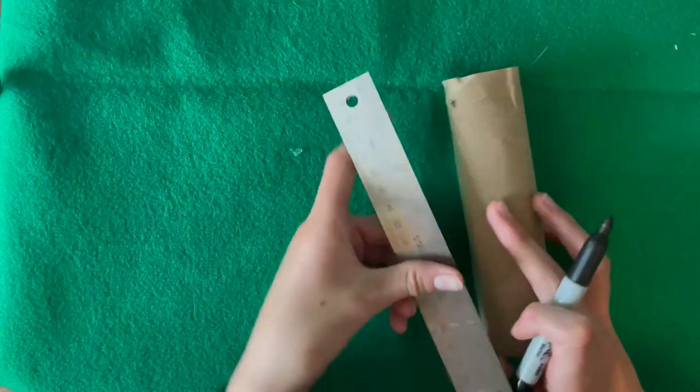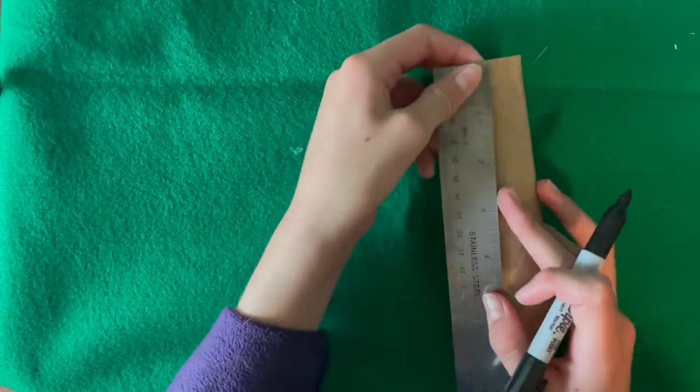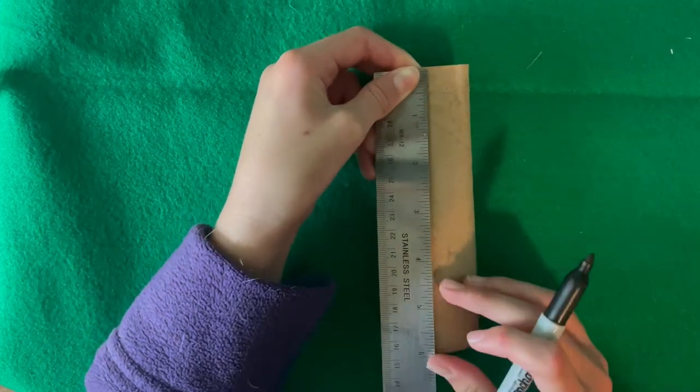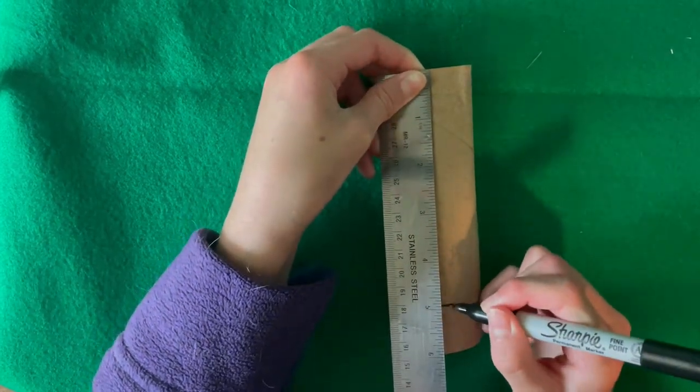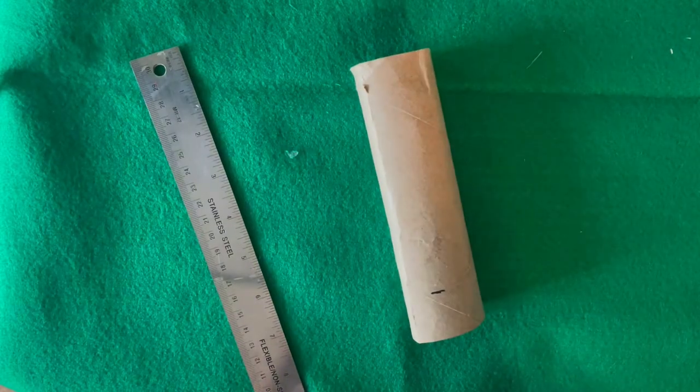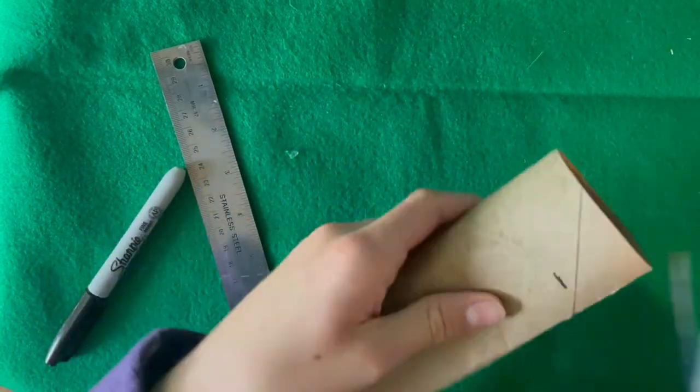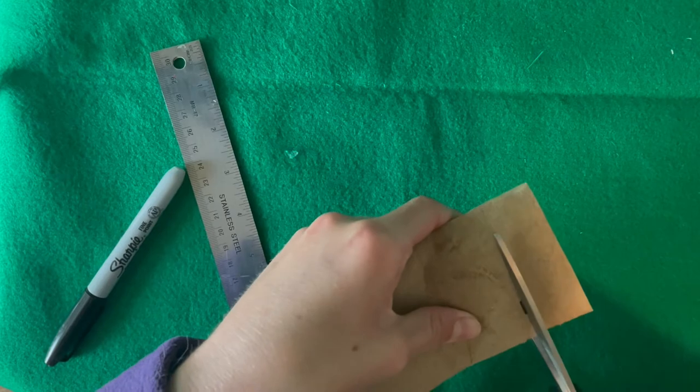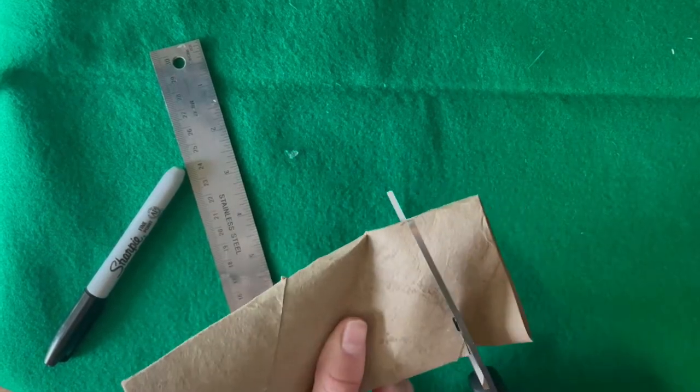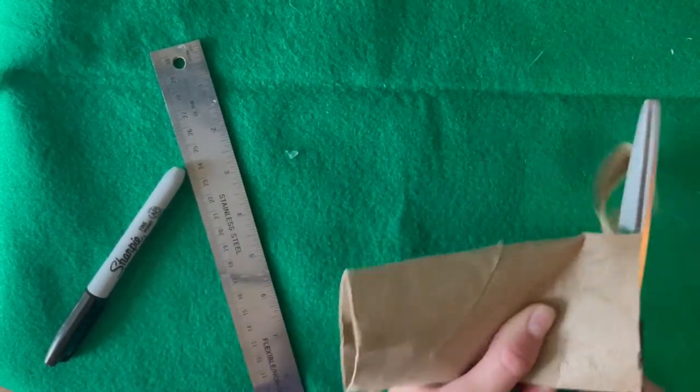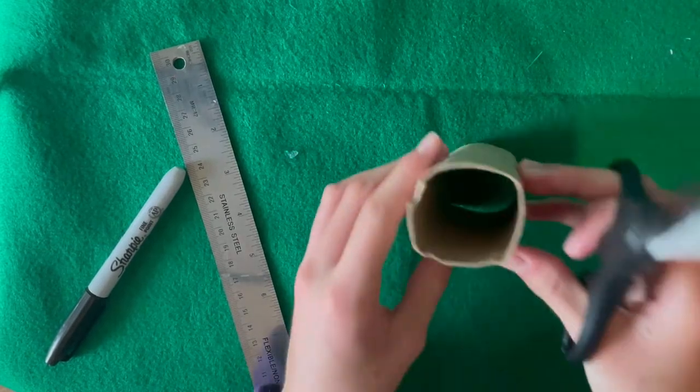So first you're going to measure five inches from the top of this paper towel and you're going to mark it. And then we're going to take our scissors and flatten the paper towel roll and cut it off. Now I have a shorter paper towel roll.